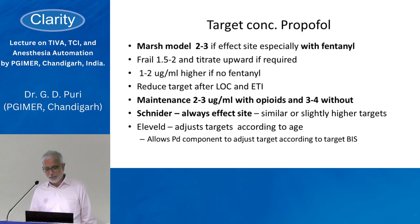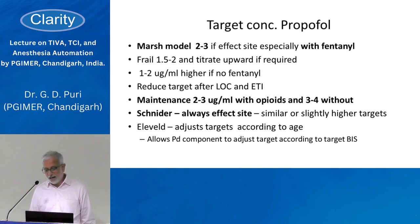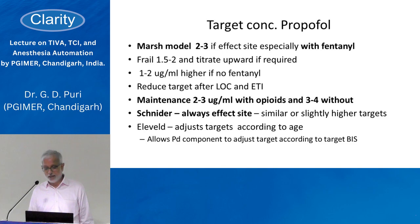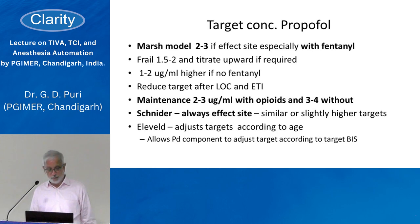Now about the Marsh and Schneider models: the Schneider model has a fixed volume of distribution that doesn't vary with weight, meaning it may not produce sufficient concentration in a heavier patient. The Marsh model's initial volume of distribution varies with weight. A target of 2–3 micrograms/ml is good enough, especially when using fentanyl. Without fentanyl, you may need 1–2 micrograms/ml higher concentration.